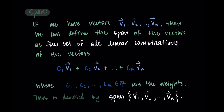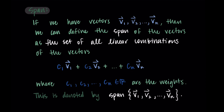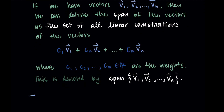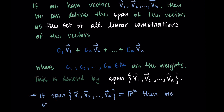One of the things we're often curious about is whether or not the span is equal to all of the real numbers of a certain dimension. If the span of v1 through vn is equal to Rn, then we would say in shorthand that the vectors span Rn. This works with any set: if the span is equal to the set, then we say those vectors span the set.